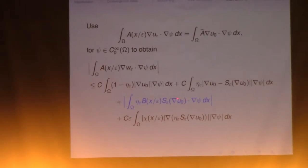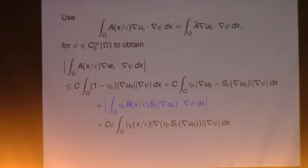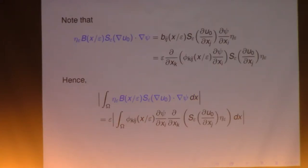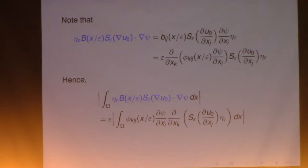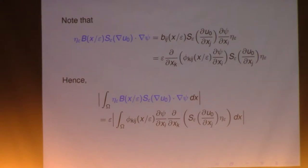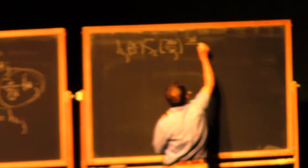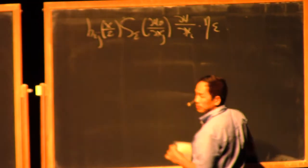So the problem is: how do you deal with the third term, where you don't see any epsilon? How do we know epsilon or square root of epsilon will come up? This comes up from the property of the corrector — specifically, the skew symmetry of the flux corrector. The calculation goes like this: you have B_ij of x over epsilon, times S_ε times du0/dxj, and d psi/dxi times eta_ε.